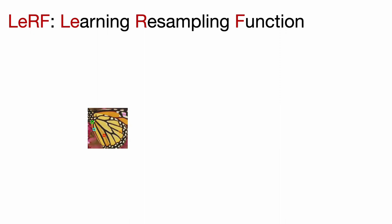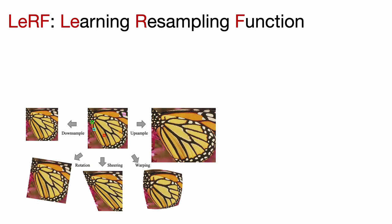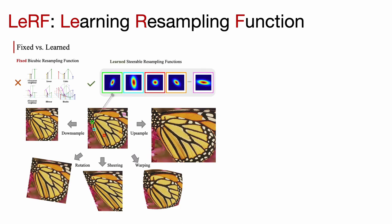Image resampling is a technique that manipulates the image according to a geometric transformation, such as downsampling and shearing. Typically, resampling is achieved through interpolation. In this work, we propose a novel method of learning resampling function to make the interpolation process adaptive to local structures.